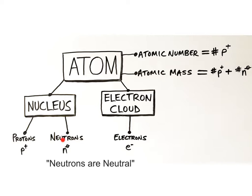Each neutron is neutral, which means it does not have a charge. Neutrons are symbolized by an N with a zero superscript. Remember the phrase 'neutrons are neutral' to help you remember their uncharged state.